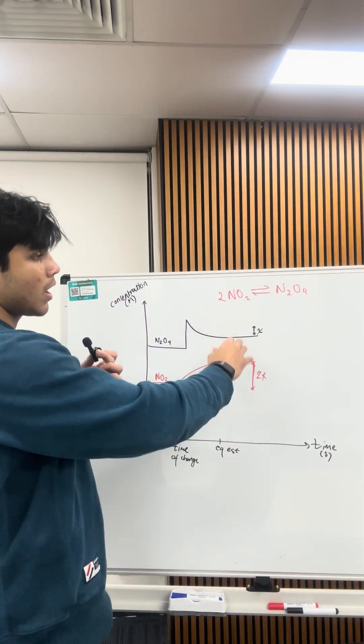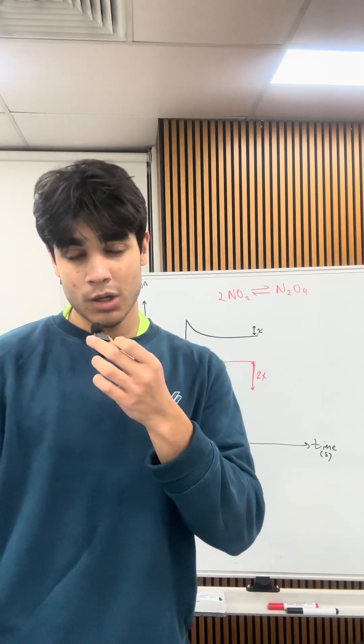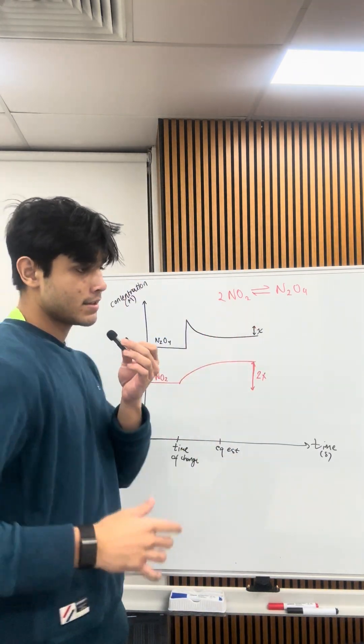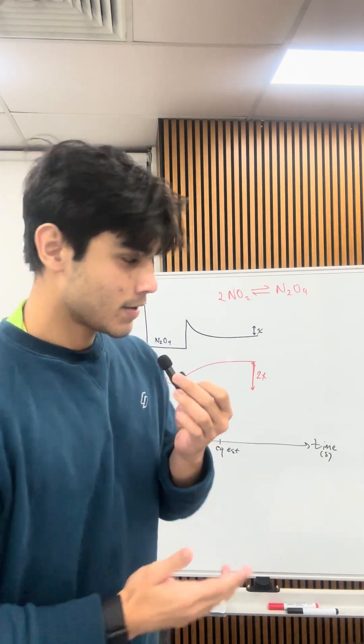We've got this graph of nitrogen dioxide and dinitrogen tetraoxide equilibrium, which is one of the most common equilibriums. NO2 commonly manifests as a brown color for anyone doing this experiment at their schools.